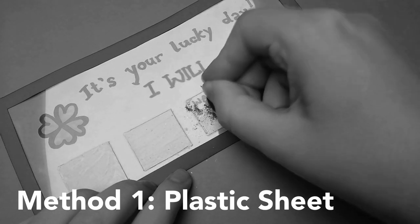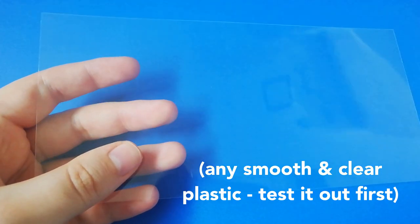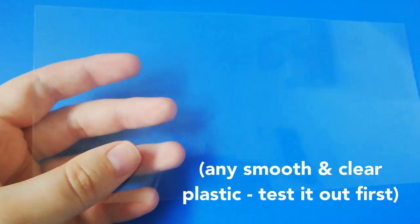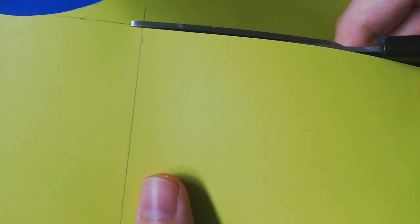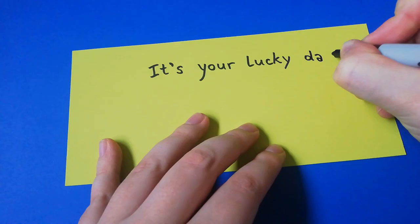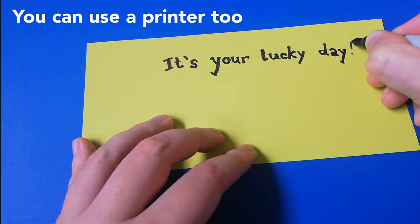Now let's make some scratch-off cards! So I'm starting off with a piece of plastic. Next you will need some paper and I'm going to make it the same size as the plastic piece. Now you can write whatever you want on your ticket.